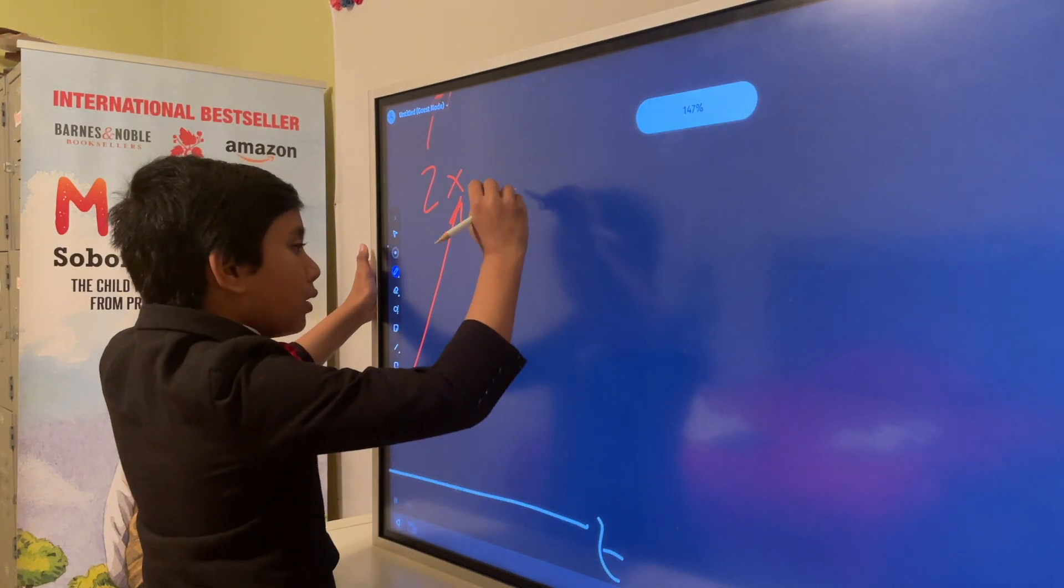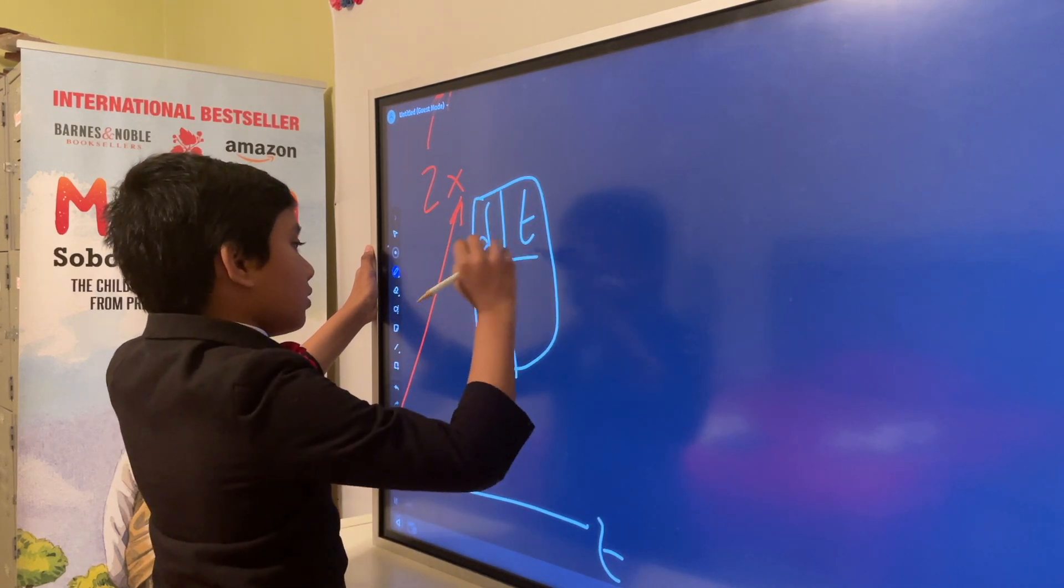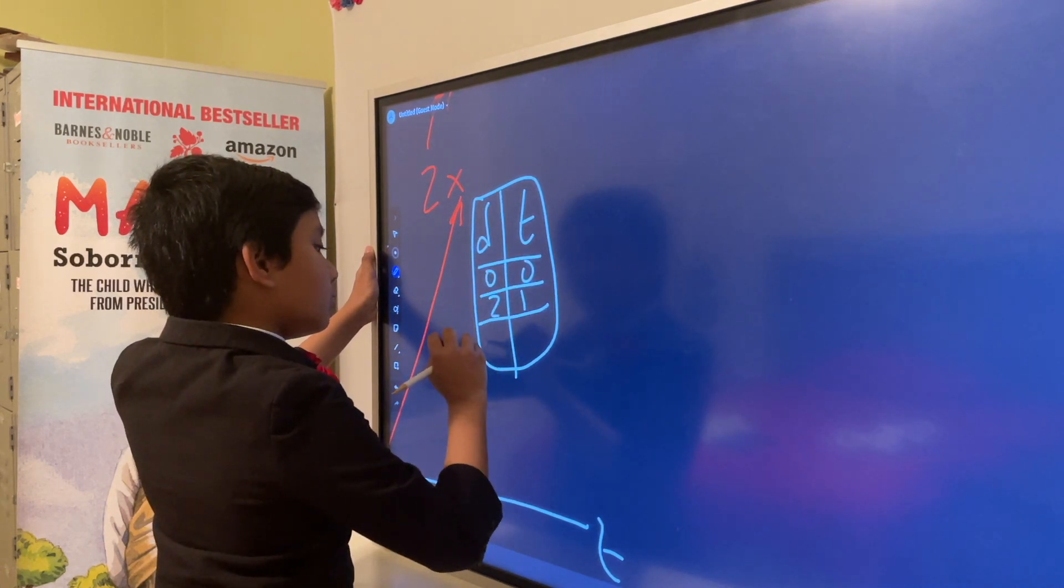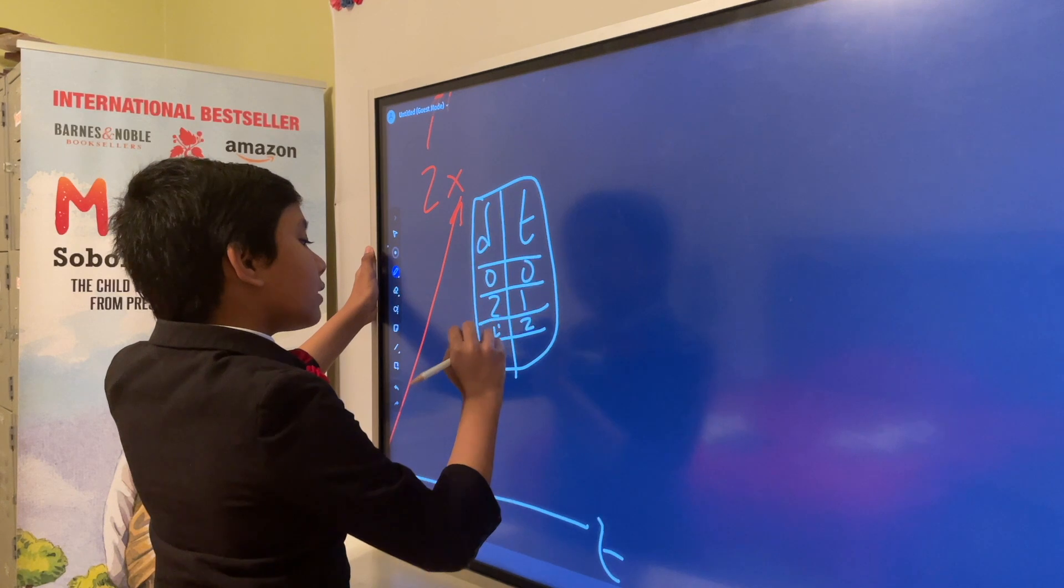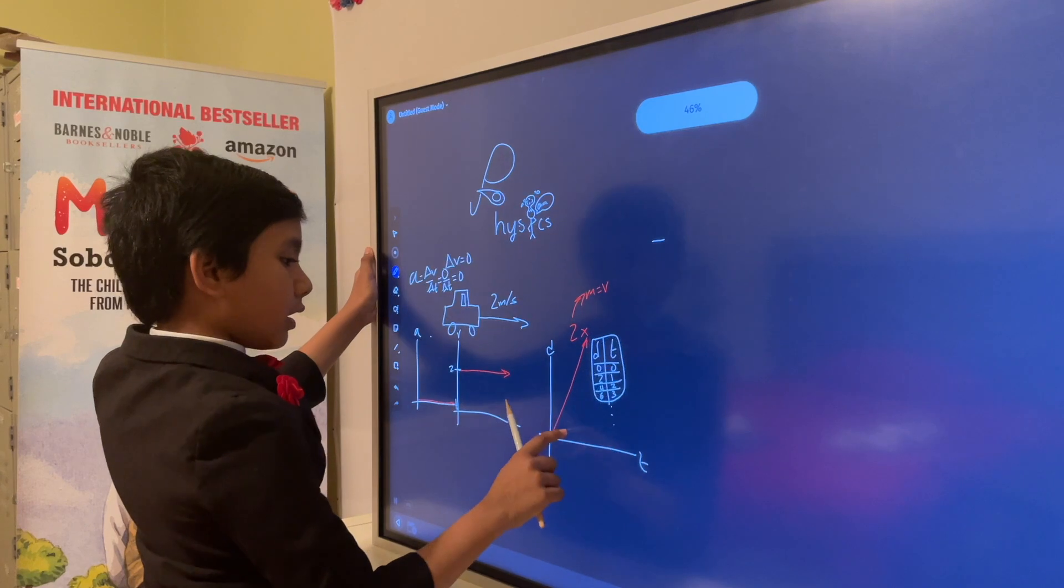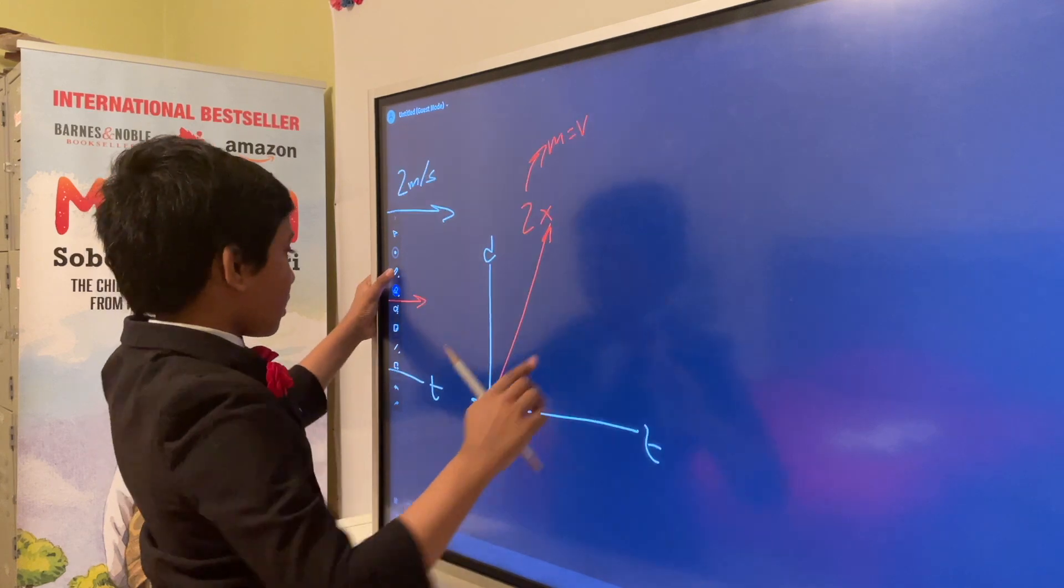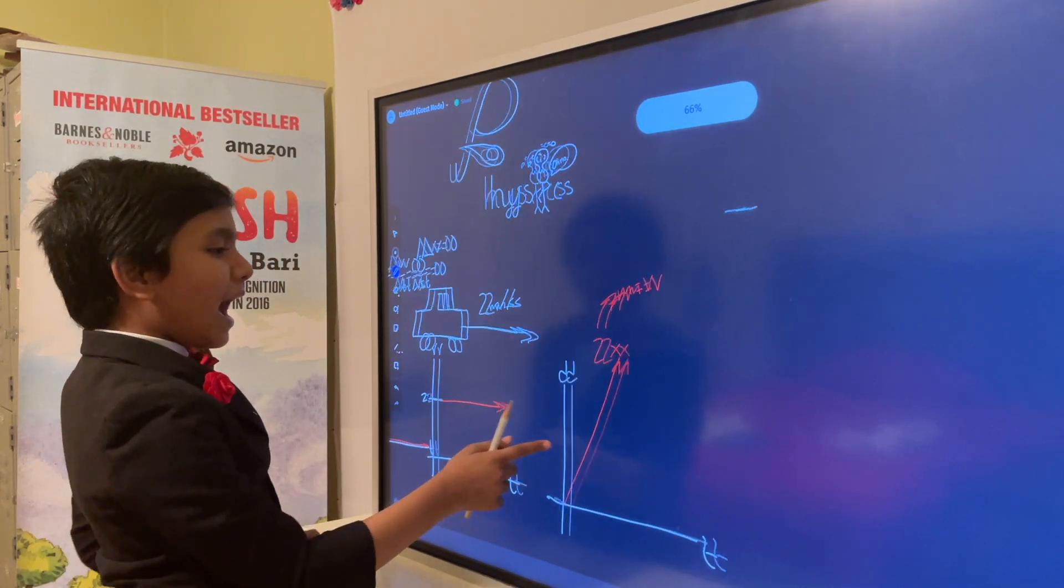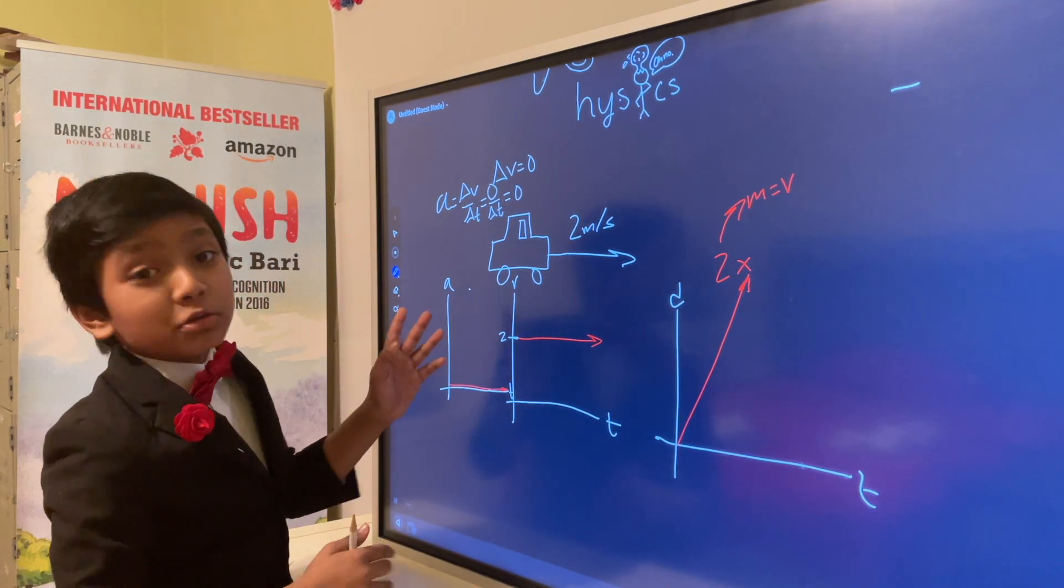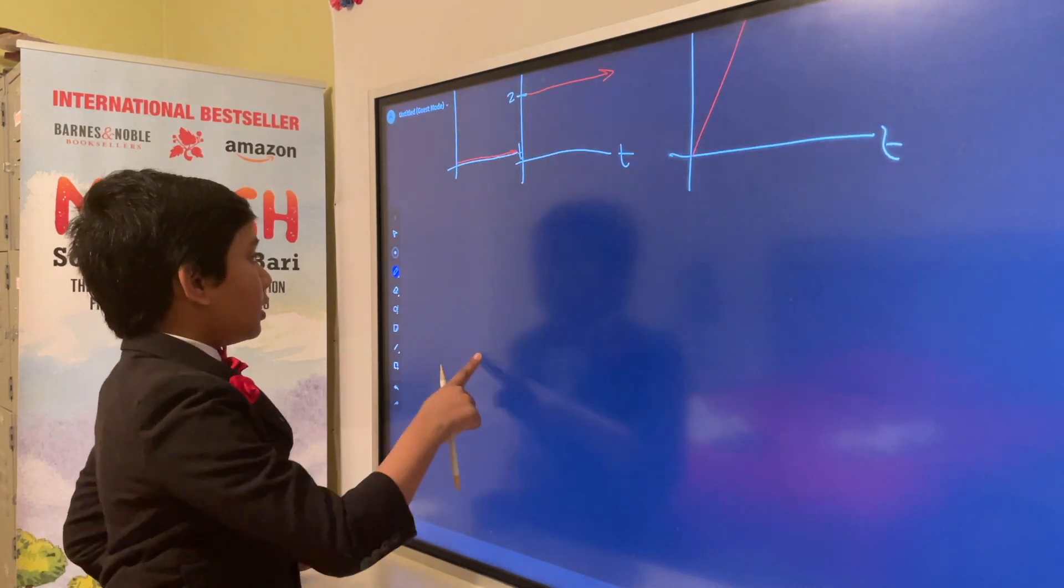So for example, at 0 seconds this is 0, 1 second this is 2, 2 seconds this is 4, 3 seconds this is 6, and so on. And in fact, that is the AT graph, the VT graph, and the DT graph, all in one for this scenario. Pretty simple.